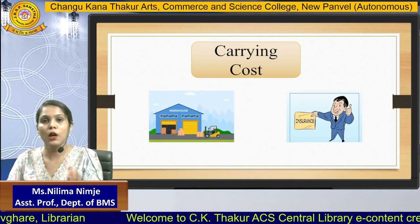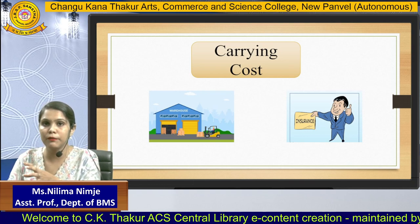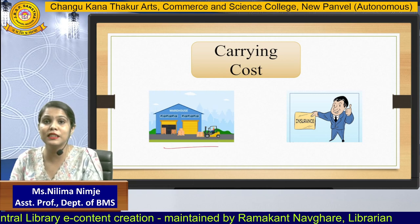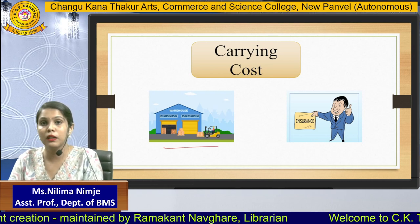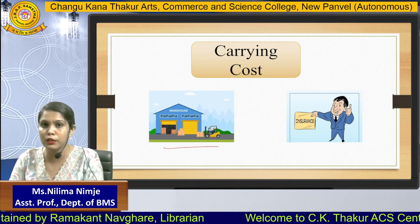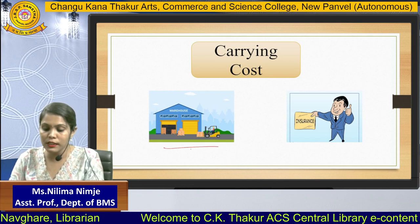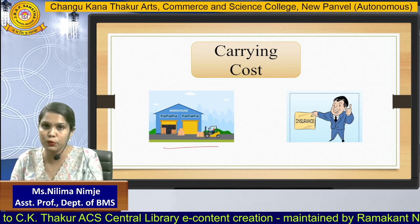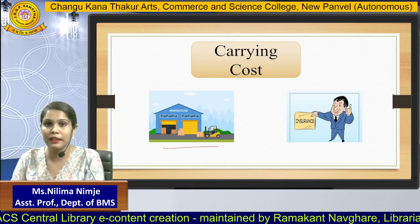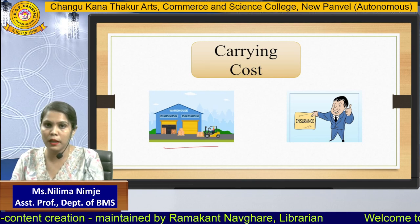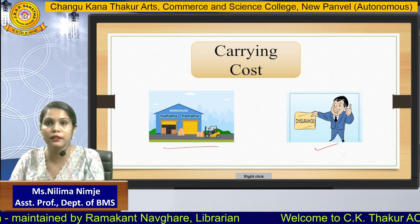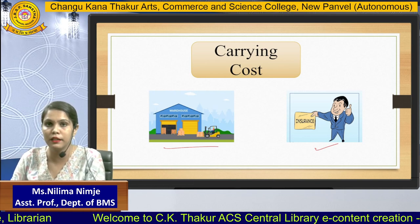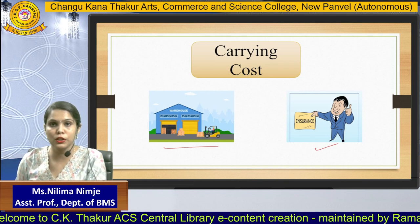Moving towards carrying cost — once I place the order, I need to hold that order somewhere. For example, if I have ordered 10,000 goods, I need to keep them in a warehouse. So I need to pay rent for that warehouse, and that rent comes under carrying cost. Also, goods kept in the warehouse can meet uncertainty — they can catch fire or get damaged — so I need proper insurance for those goods, and that insurance also comes under carrying cost. So carrying cost covers all expenses incurred once the goods have arrived at my place.